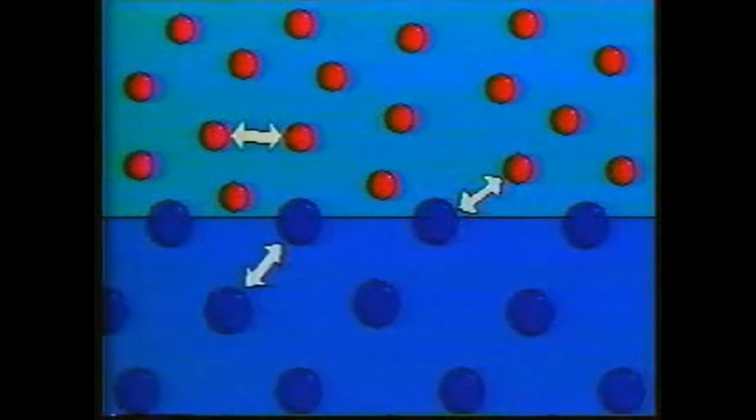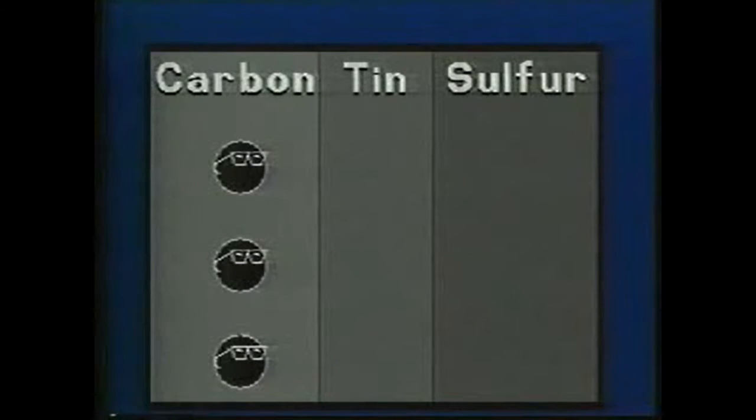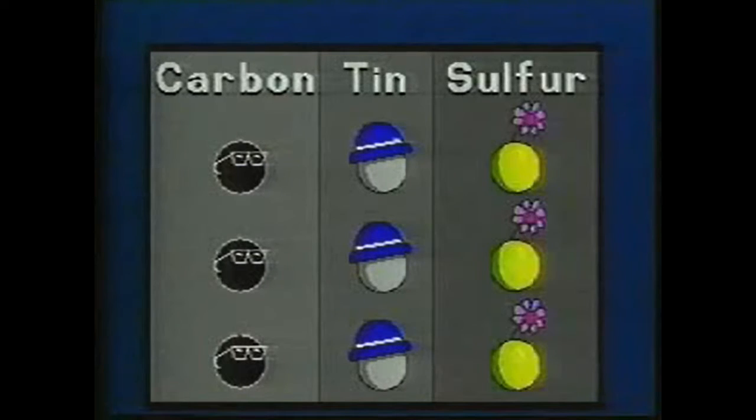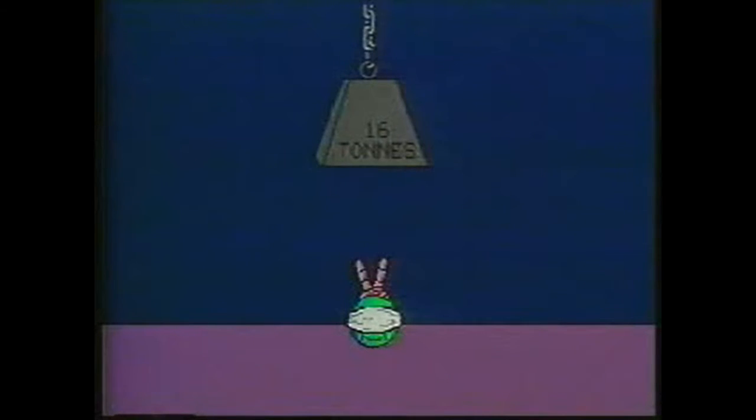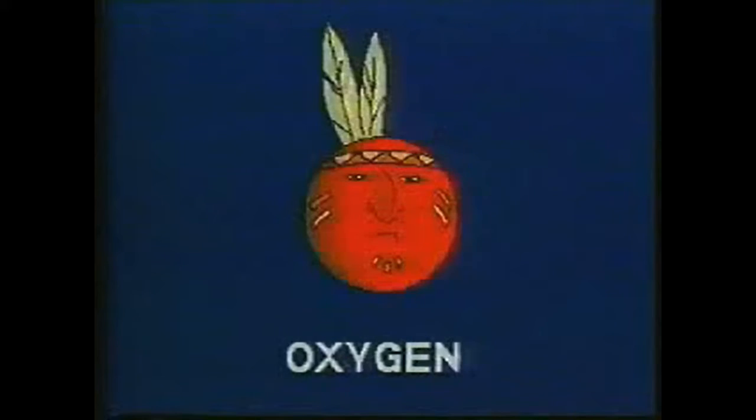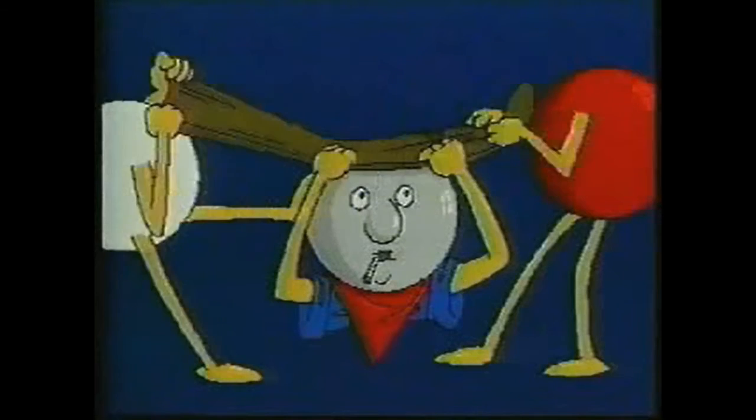Dalton's theories implied that matter was made up of individual particles with spaces between them. Dalton concluded that elements of matter consist of characteristic kinds of particles. The particles or atoms of an element are identical to each other. Atoms are indivisible. There are as many kinds of atoms as there are elements. The atoms of one element cannot be converted into the atoms of another element.